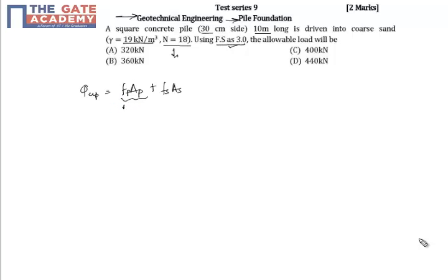This is ultimate point bearing and this is ultimate skin friction. Skin friction F_S is average skin friction and F_P is given as unit point or toe resistance.